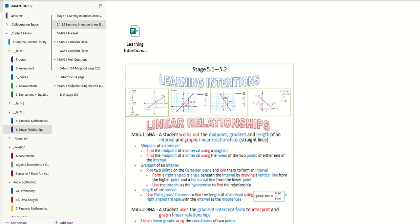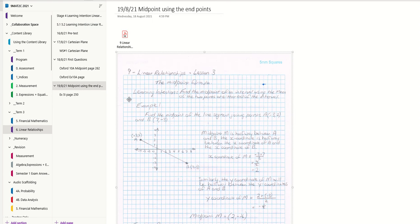Good morning U9, or good afternoon. We're going to carry on with our linear relationships. Yesterday we looked at the midpoint of an interval and we found the midpoint using a diagram. Today we're going to look at finding the midpoint of an interval using the mean of the two points at either end of the interval. Let's go have a look. So midpoint using the endpoints.